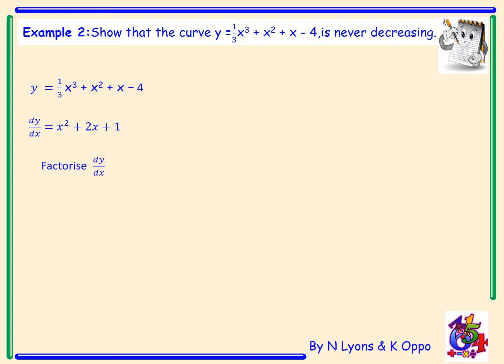Now we need to factorise in order to find out what is happening with the curve. dy/dx can factorise to give x plus 1 multiplied by x plus 1. We therefore have a perfect square. So it's x plus 1 all squared.